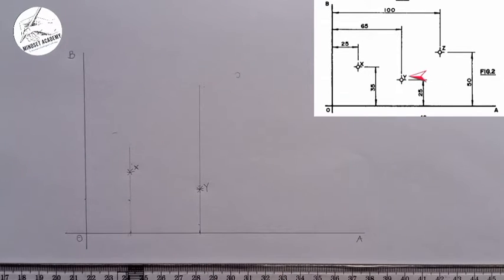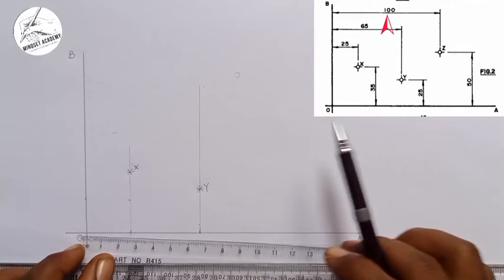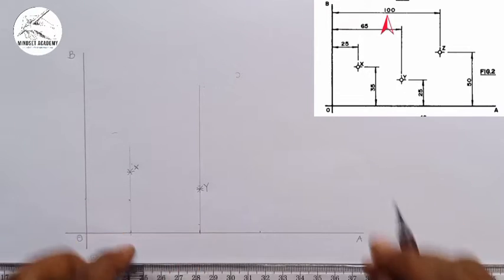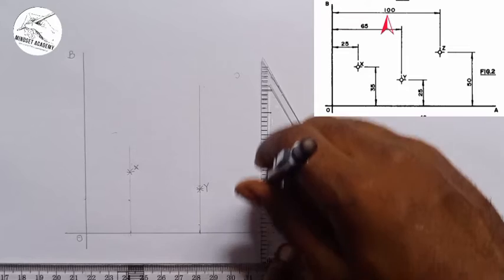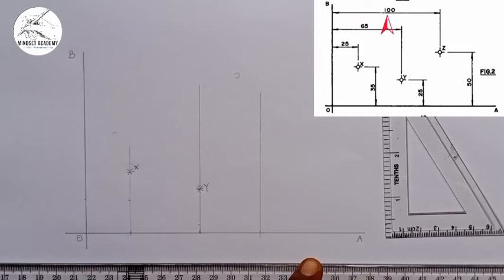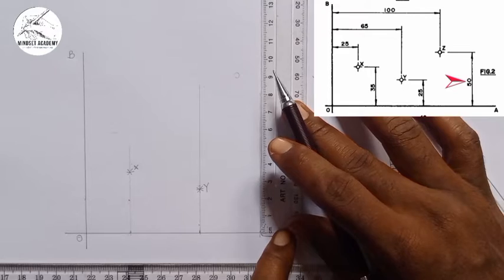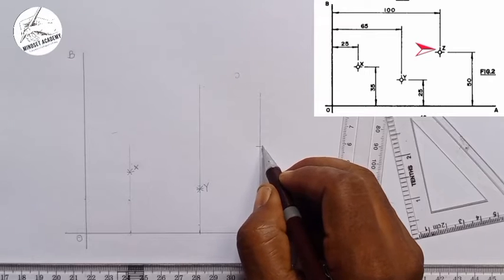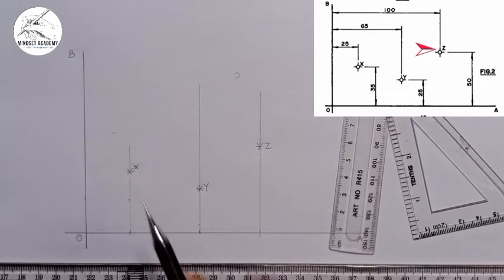Now the next one is for Z. Z is 100 millimeter away from the reference point OB. So I'll measure 100 from here, from this point 0 to 100 is 100. So on that point I will draw a vertical line upward this way. So on that line to get Z I'll measure a height of 50 from OA reference point. So this is 50, so that will be my point Z. So I'm going to put an asterisk there, you can see that. There's my point Z. So this is X, Y, Z.